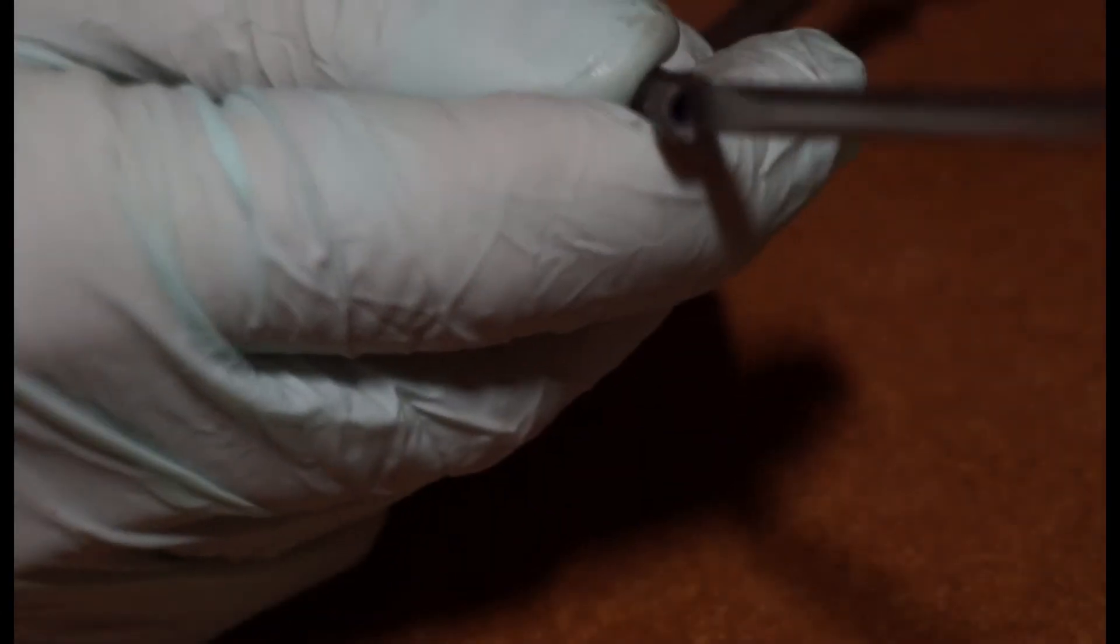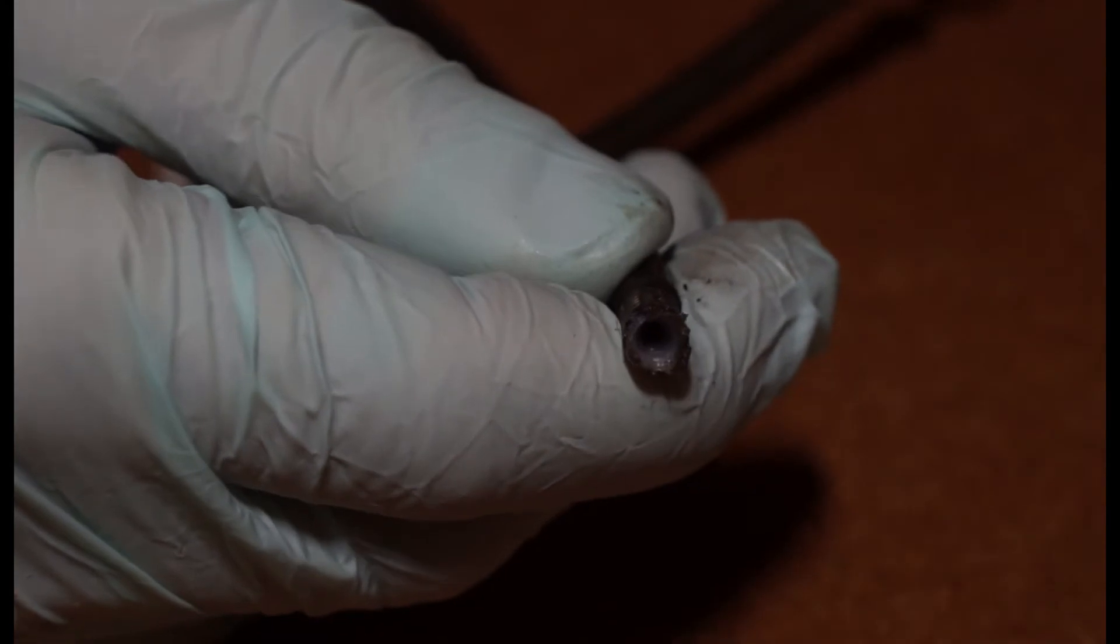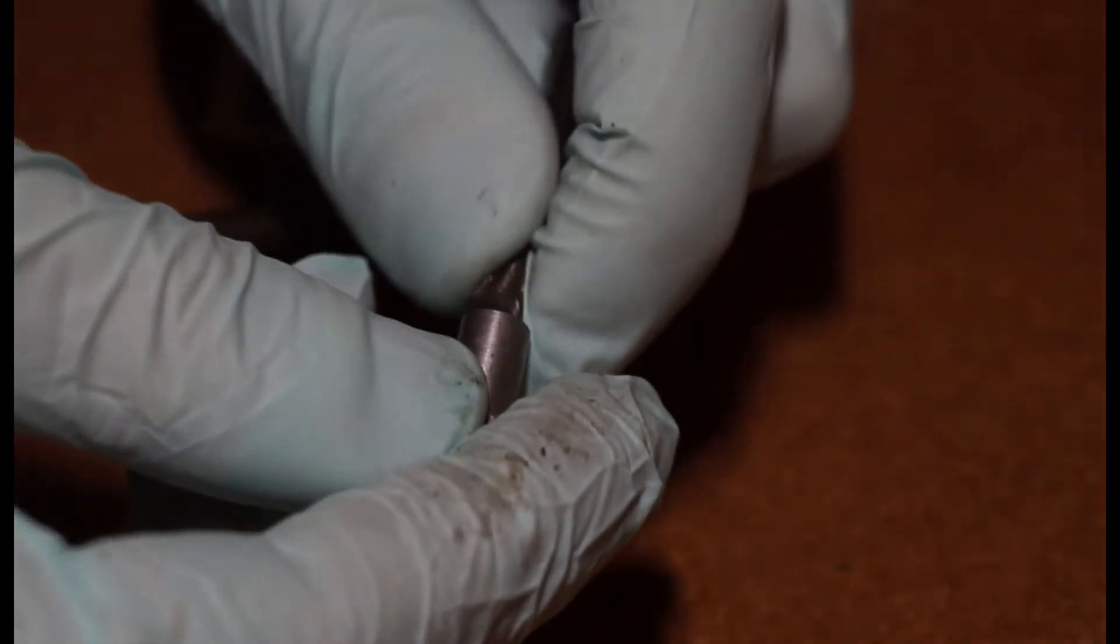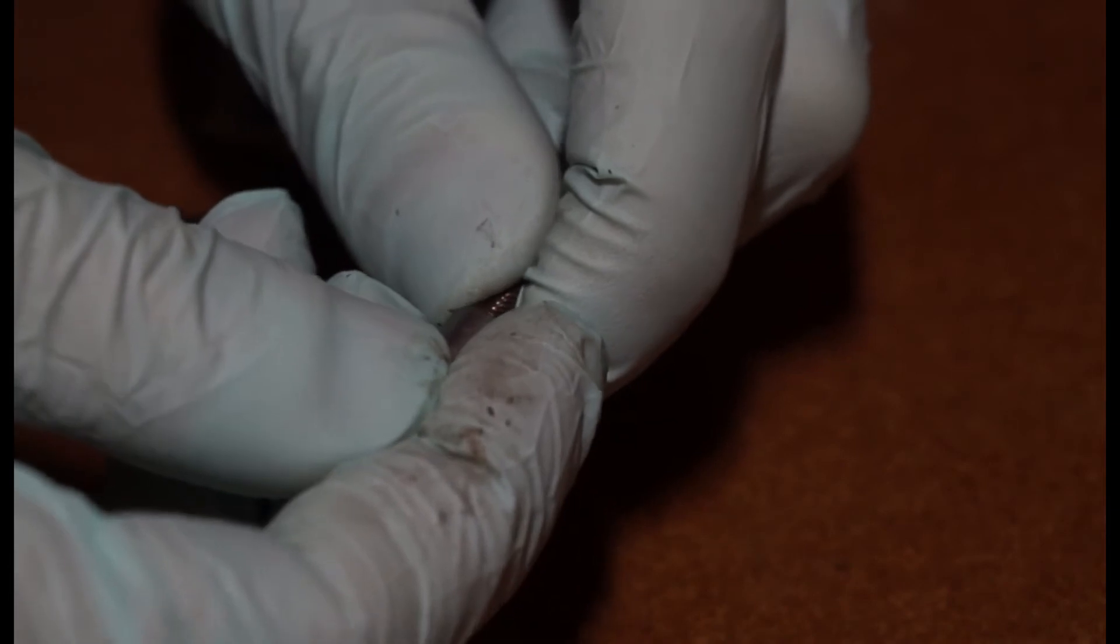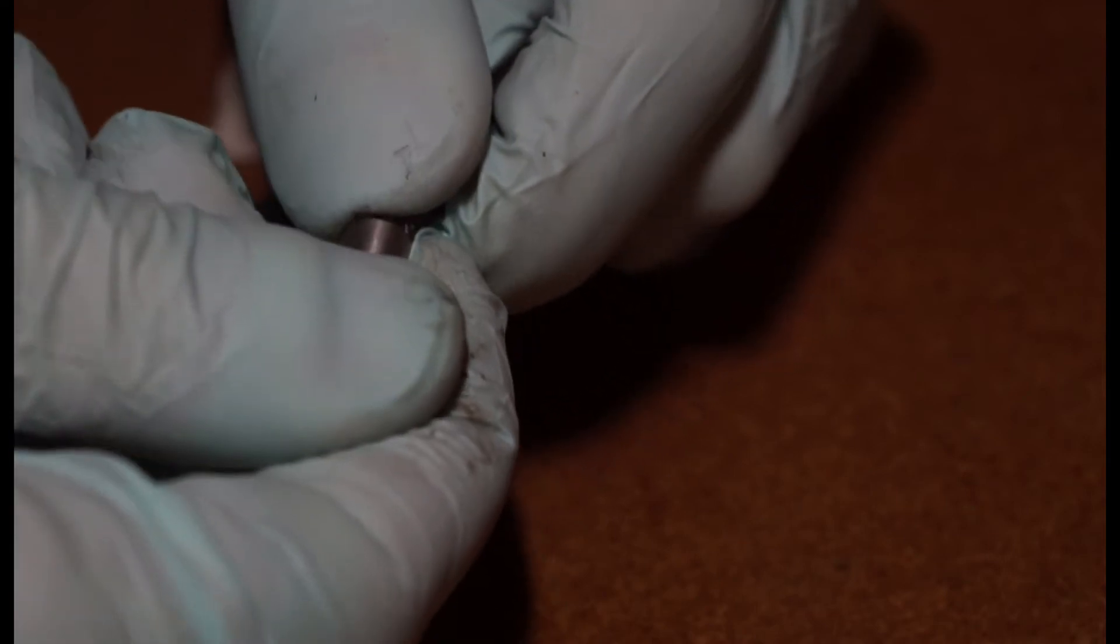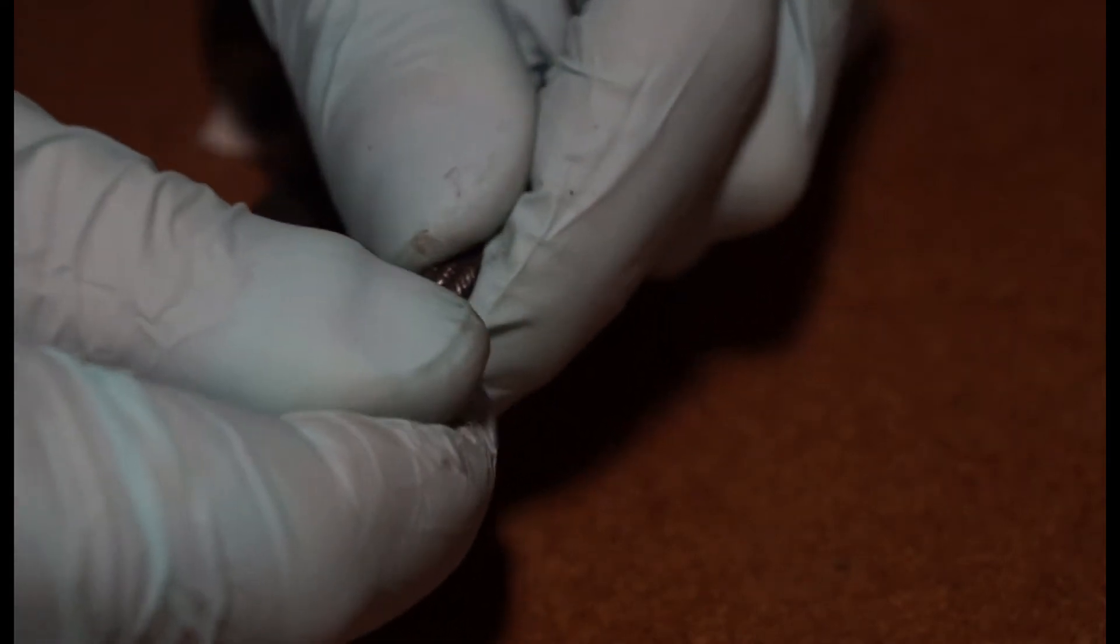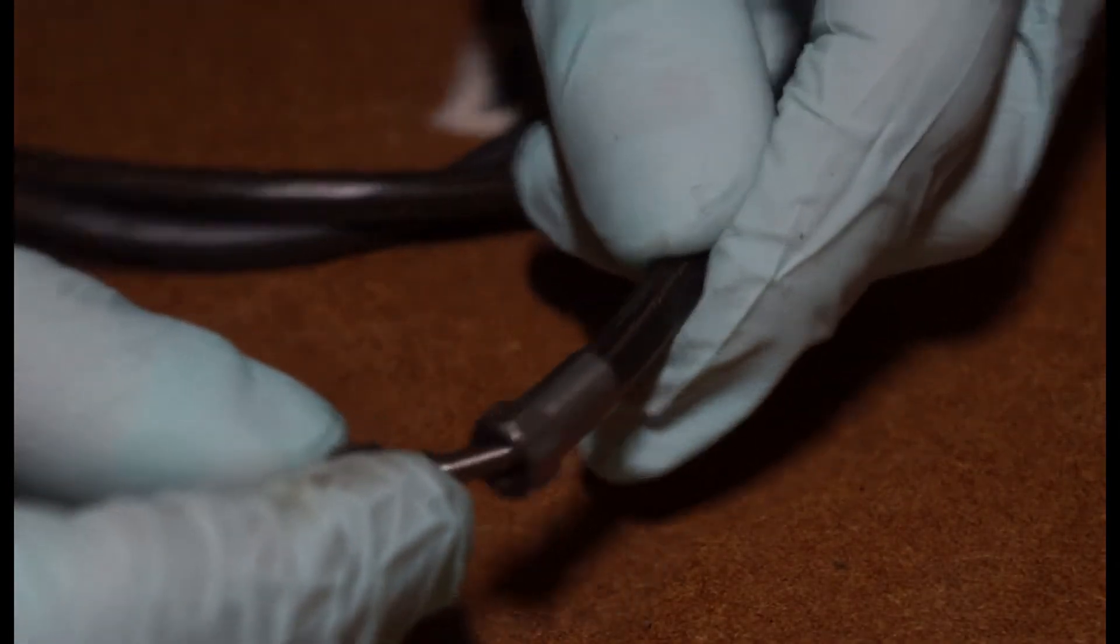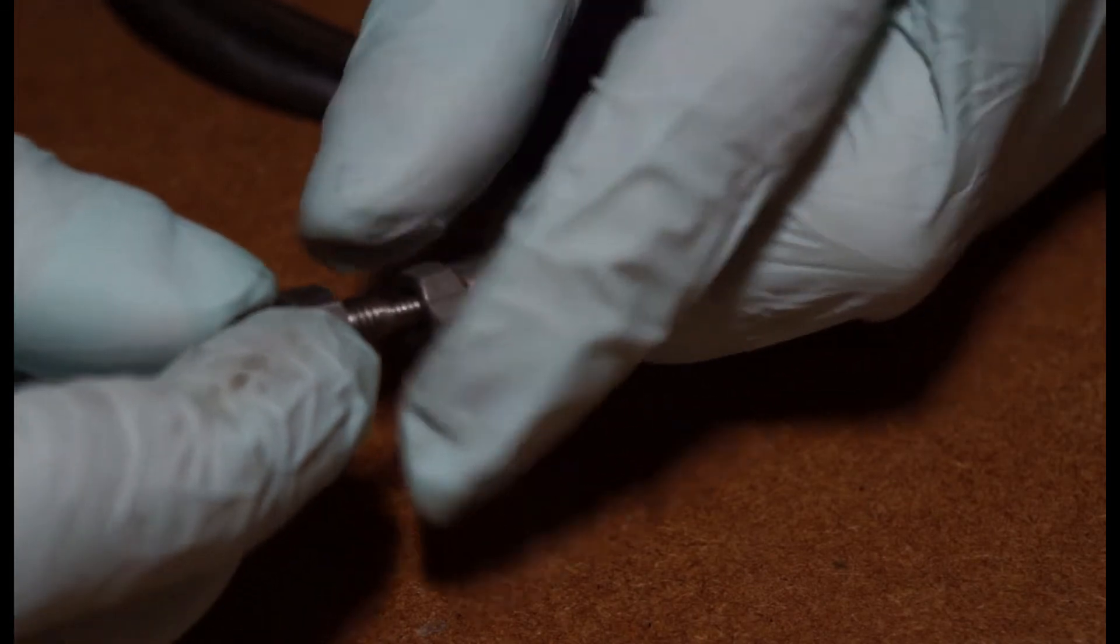You also might want to get like a flathead screwdriver and just open that up a little bit. I use this tiny little flathead and I just basically did that in there just to open it a bit so that you can get the start of the thread in there. So yeah, you're gonna put your shroud back on, try and avoid bits of frayed metal, just push that down.